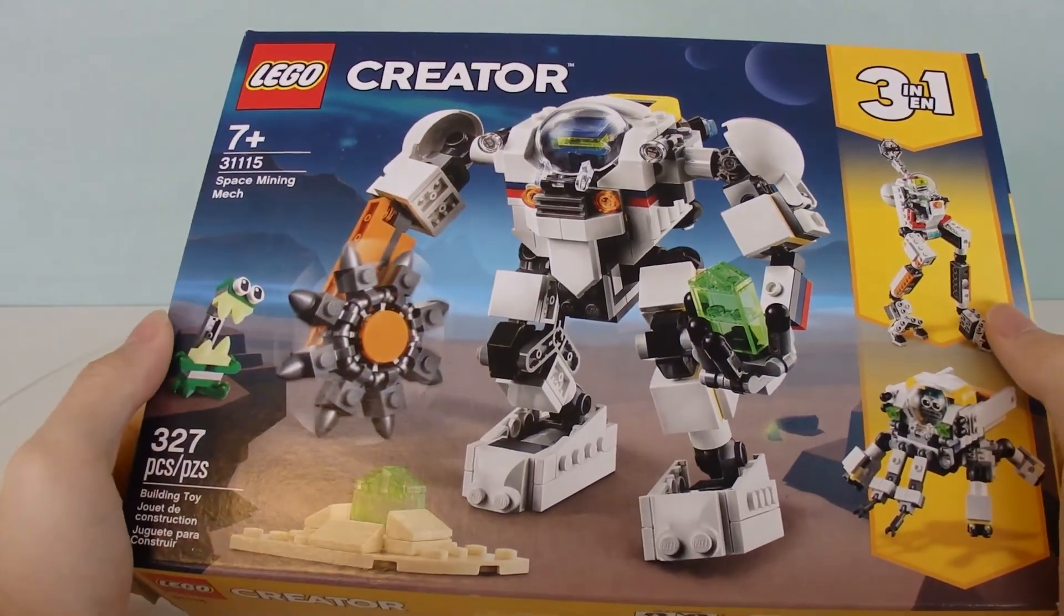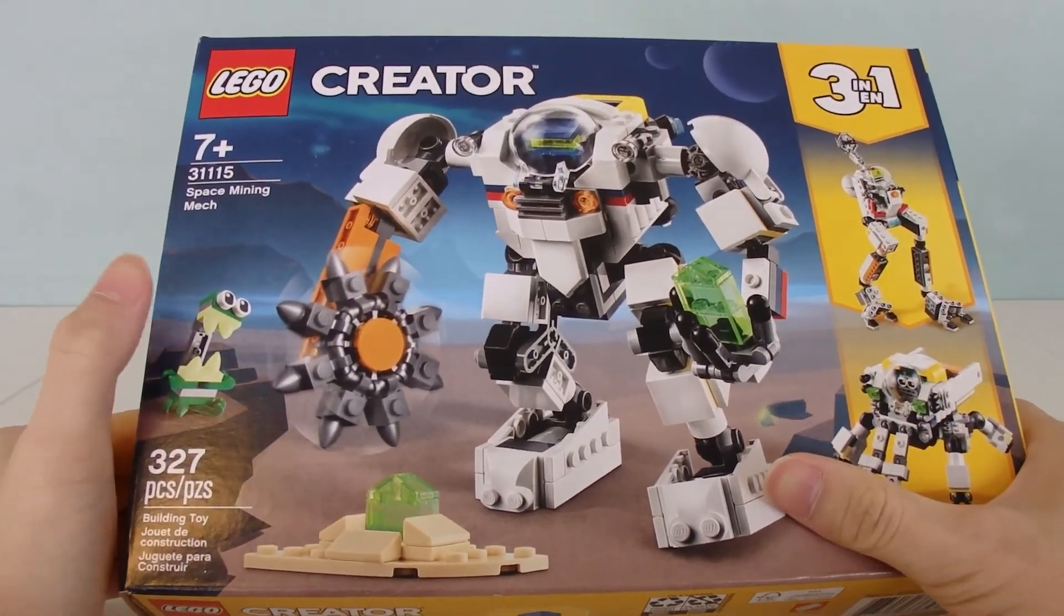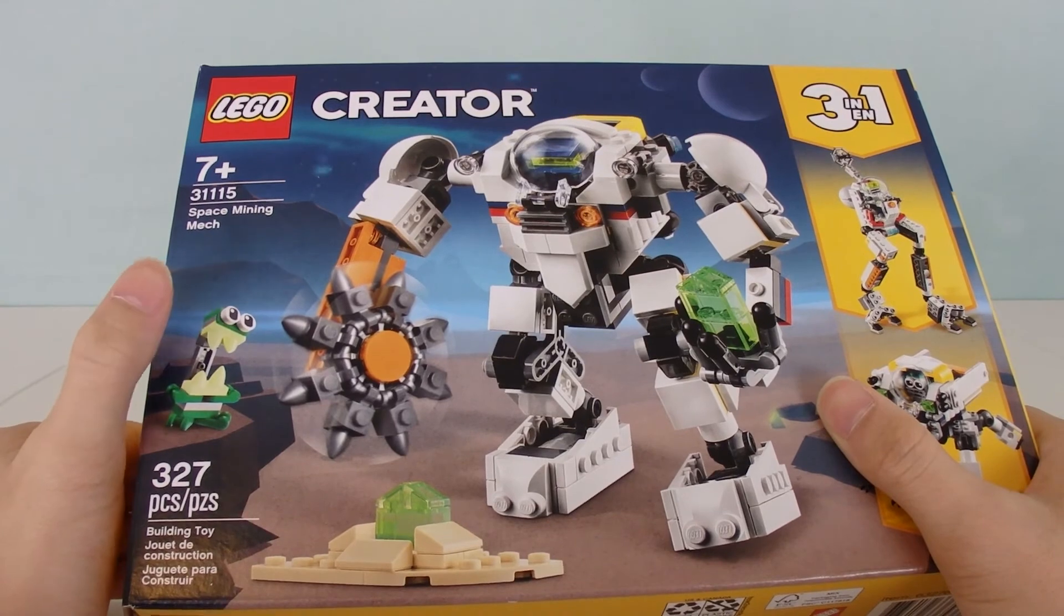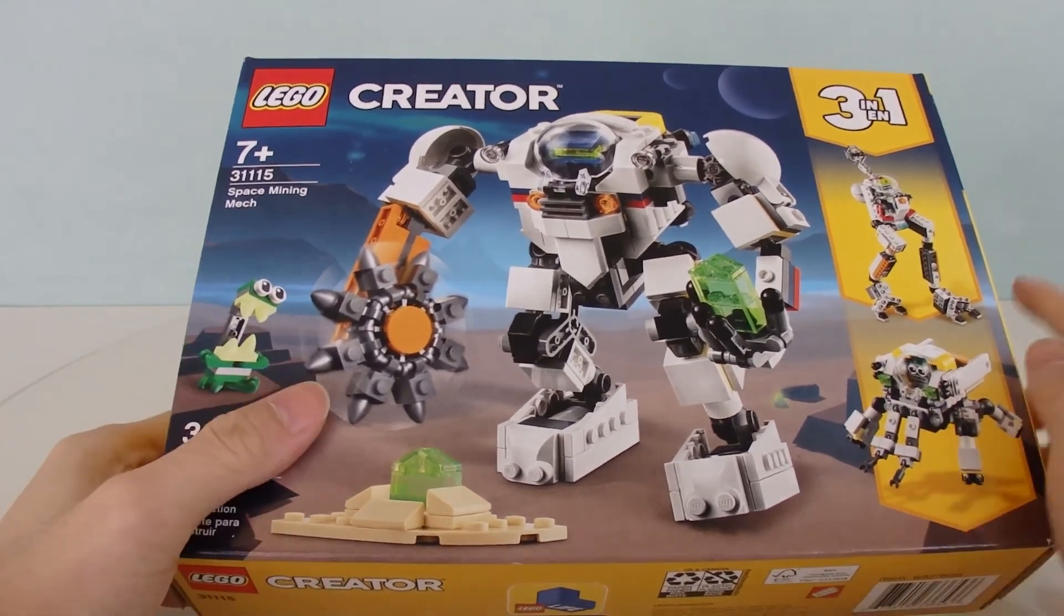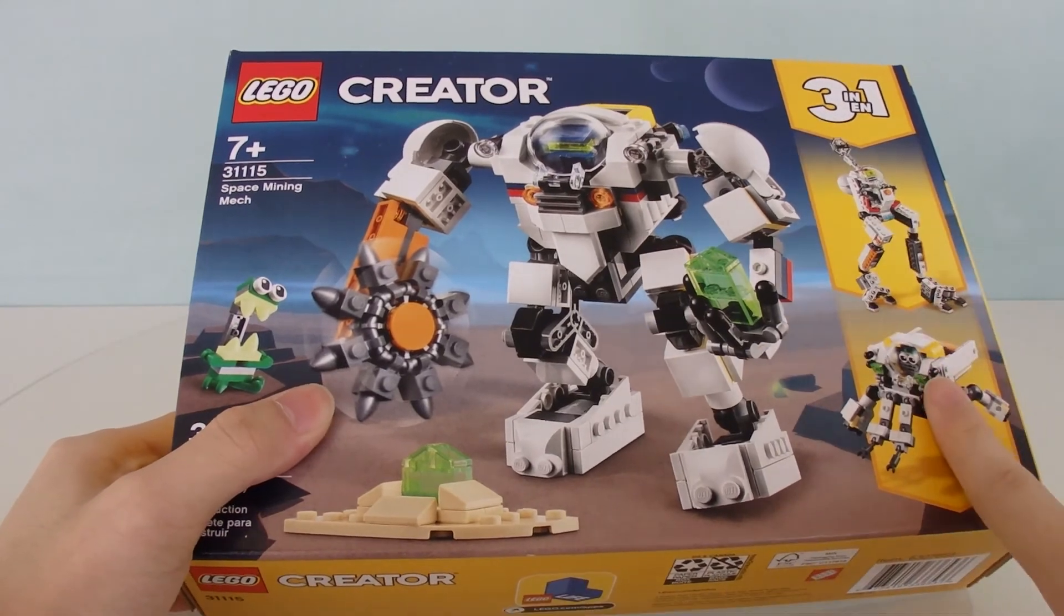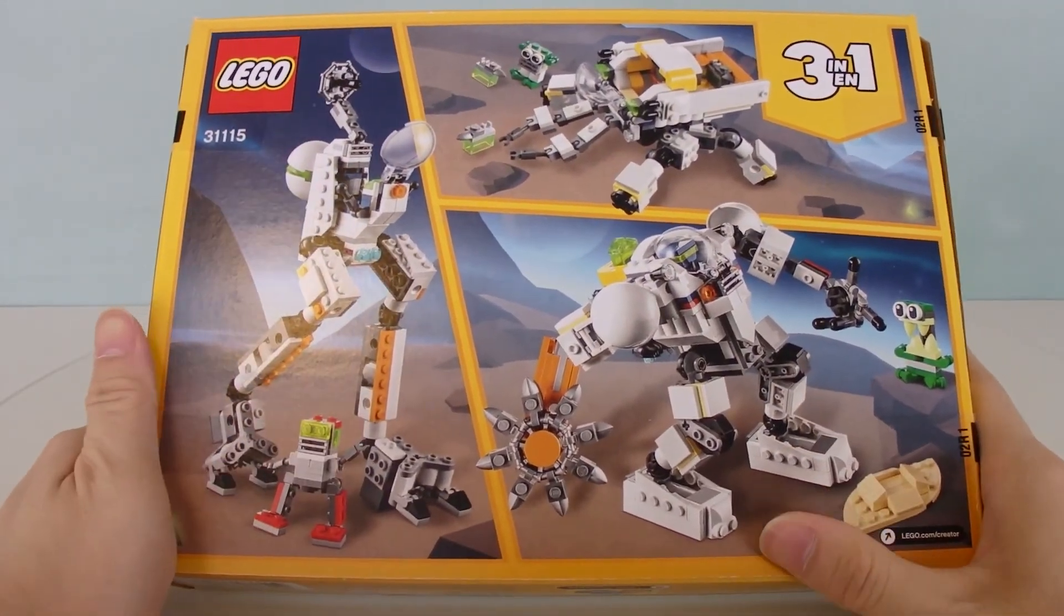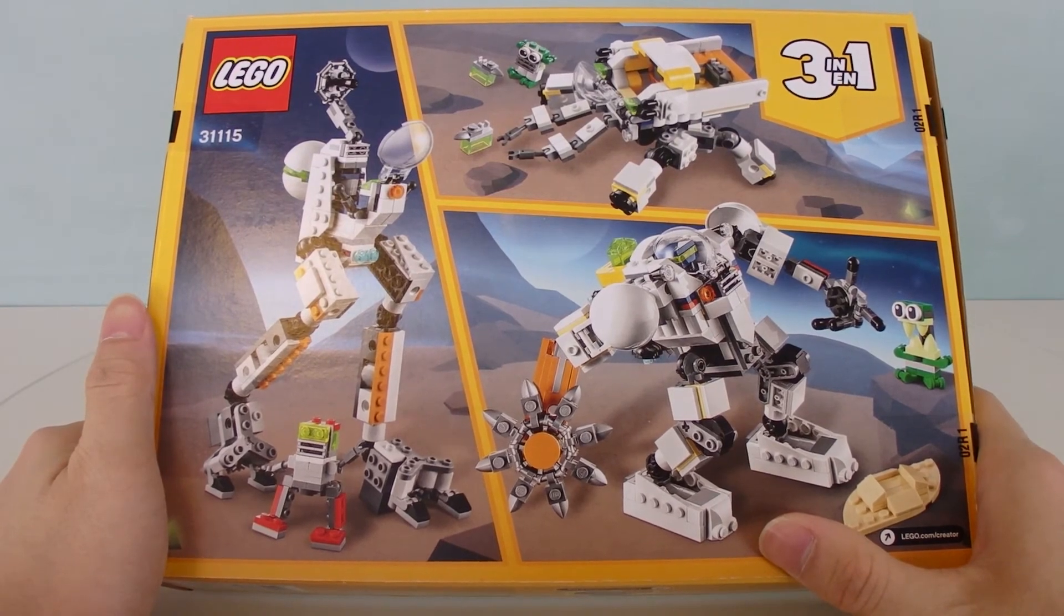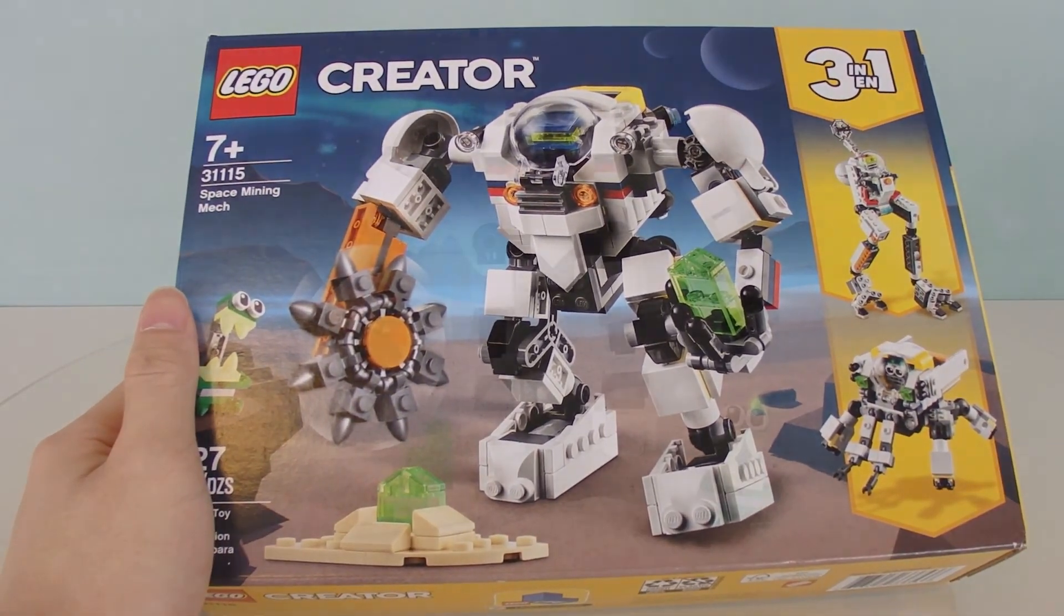And here is the box. Just to wrap it all up. This is a $25 set. So this box is a relatively small size. Set 31115 with 327 pieces. The other two alternate builds are right here as we speak. On the back of the box. Again, a picture of all three builds. All displayed. Just like that. And apart from that, there's nothing much for the box. And yeah, that is it for the box.